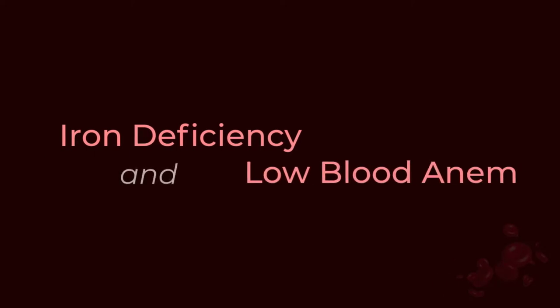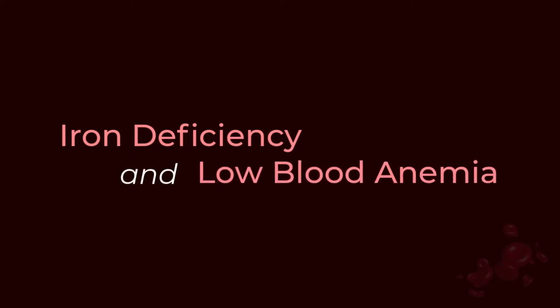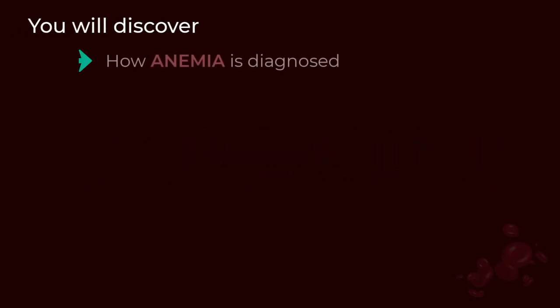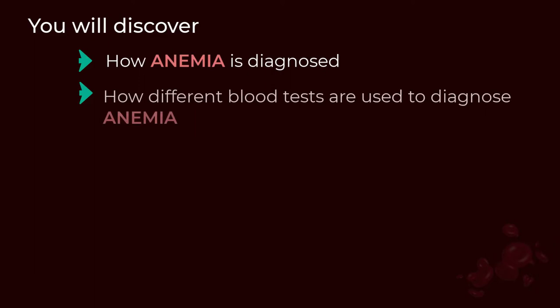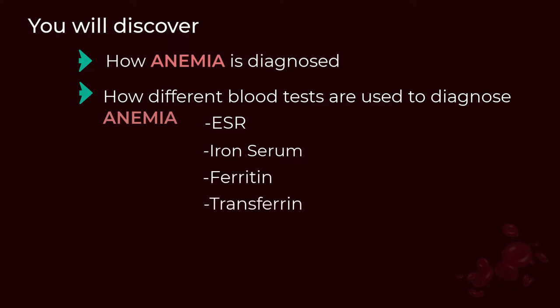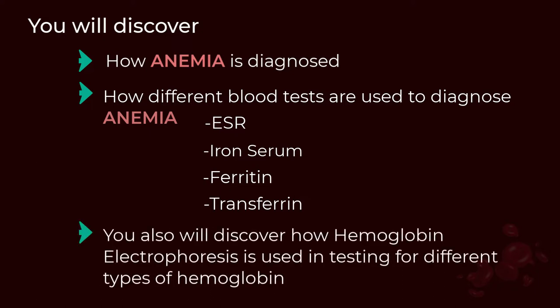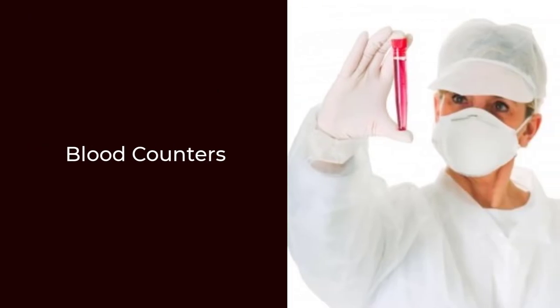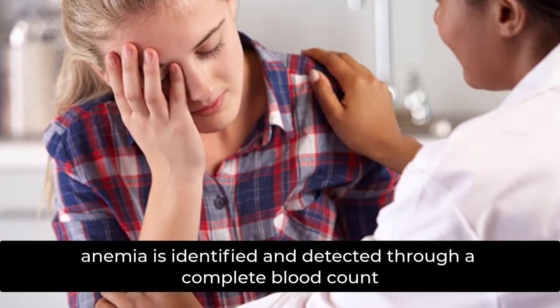In this video on iron deficiency and low blood anemia, you will discover how anemia is diagnosed. You will see how different blood tests are used to diagnose anemia, such as ESR, serum iron, ferritin, and transferrin. You will also discover how hemoglobin electrophoresis is used in testing for different types of hemoglobin.